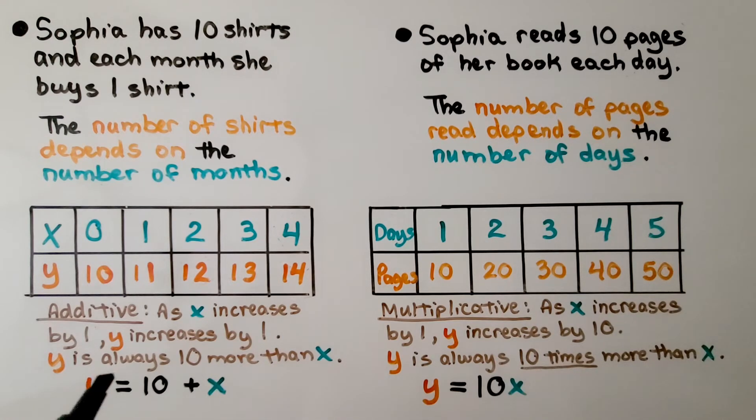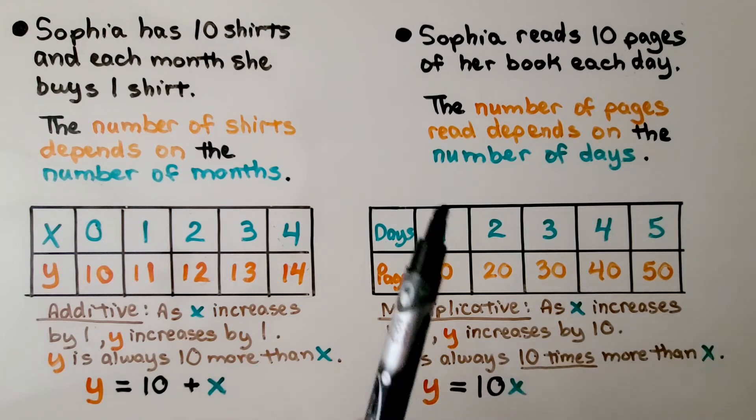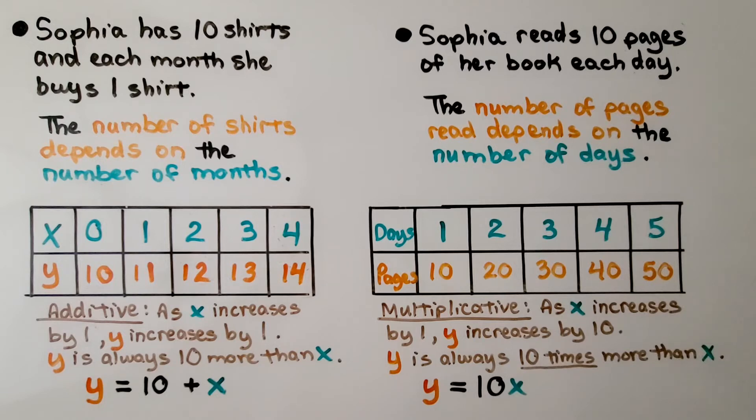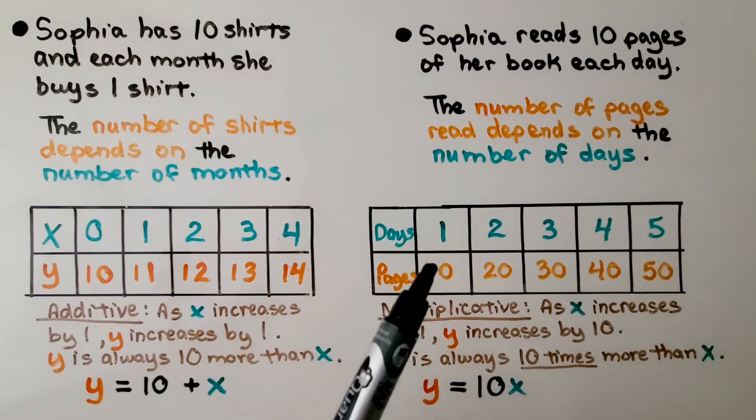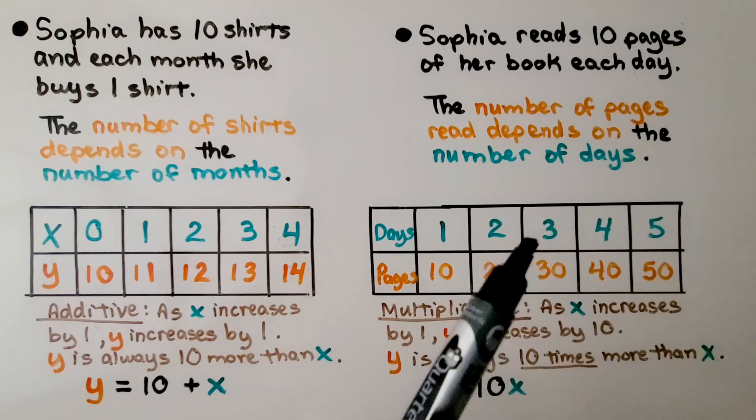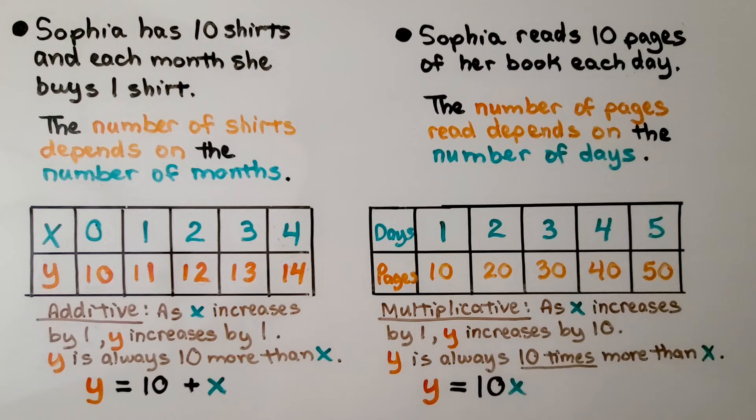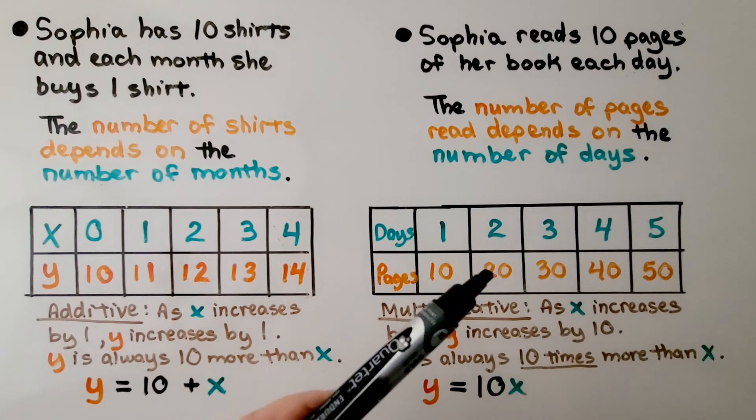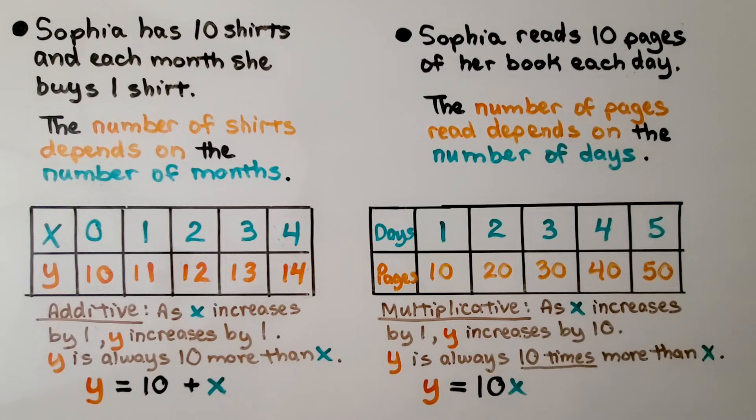The number of shirts is equal to 10 plus the number of months. Sophia reads 10 pages of her book each day. The number of pages depends on the number of days. One day she reads 10, two days she reads 20, three days 30. This is multiplicative. As X increases by 1, Y increases by 10. Y is always 10 times more than X. Our equation is Y = 10X.